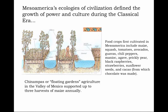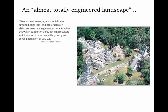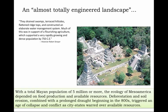Even something among the Maya called chikle was created — chikle, which became the forerunner of the modern chewing gum industry. Think of chiclets as chewing gum: a pre-Columbian native specialty. So, in the words of historian Robert Strayer referring to the Maya, it was an almost totally engineered landscape — they drained swamps, terraced hillsides, flattened ridgetops, and constructed an elaborate water management system. Much of this supported a flourishing agriculture for a very rapidly growing and dense population, reaching a total Mayan population of 5 million or more by 750 CE. But deforestation and soil erosion, combined with a prolonged drought beginning in the 800s, triggered an age of collapse and conflict as cities warred over available resources.